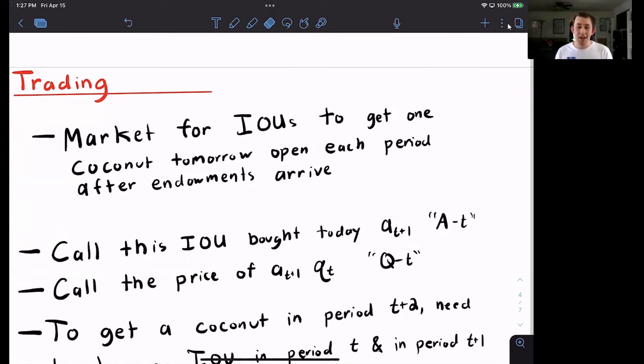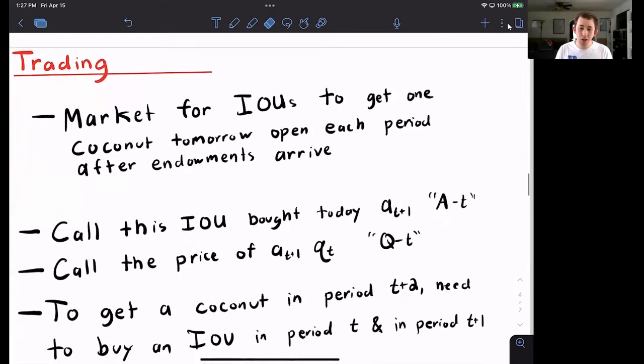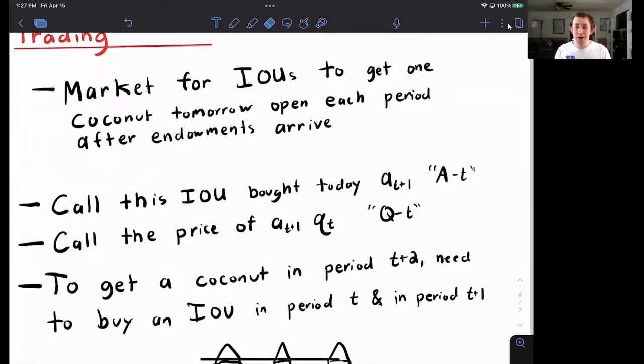And we're going to call the price of A_t+1 Q_t. And remember that coconuts go bad. So if you want to take a coconut today into period t plus two, what you need to do is you need to buy an IOU in period t. You pay someone today so they give you a coconut tomorrow.